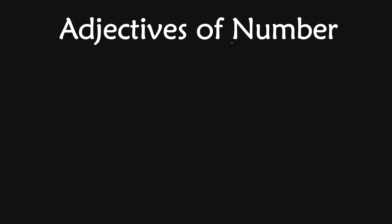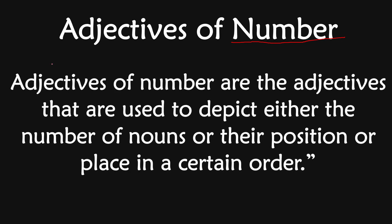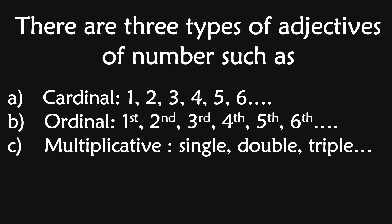Let's learn the next type — adjectives of number. While learning this, you will get the idea. Adjectives of number are the adjectives that are used to depict either the number of nouns or their position or place in a certain order. There are three types of adjectives of number: the first one is cardinal adjective, the second one is ordinal number adjective, and the third one is multiplicative number adjective. In the cardinal form we use 1, 2, 3, 4, 5 — for example: I have one pen, she has two daughters, they have three children, I want four flowers.